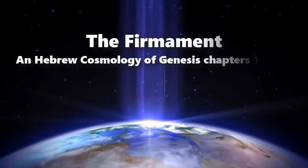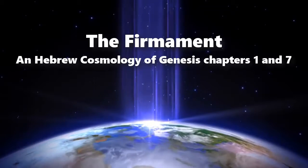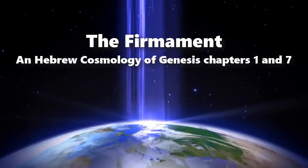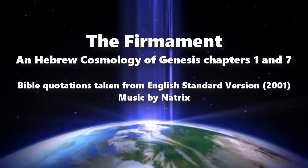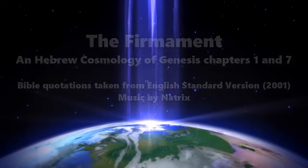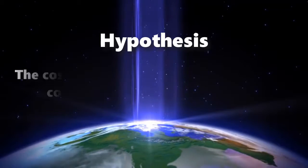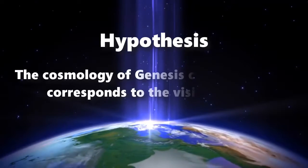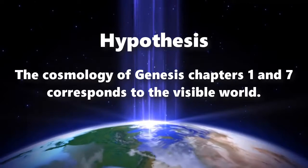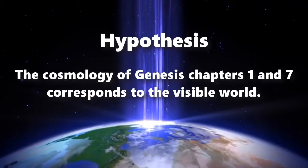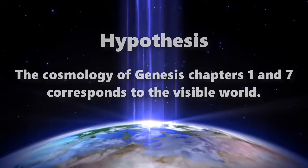The Firmament: A Hebrew Cosmology of Genesis, Chapters 1 and 7. Hypothesis: The cosmology of Genesis, Chapters 1 and 7, corresponds to the visible world.